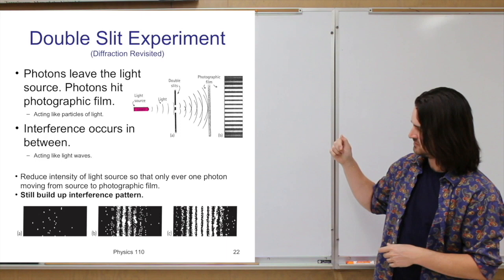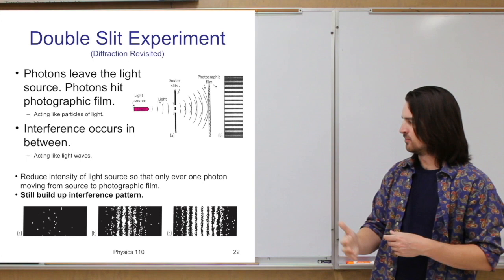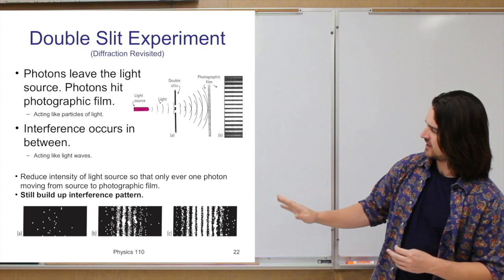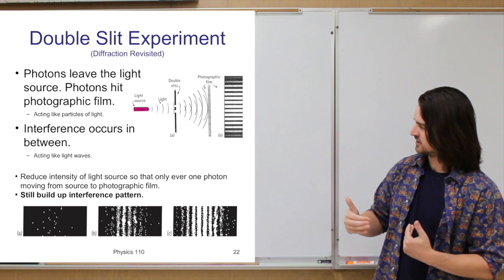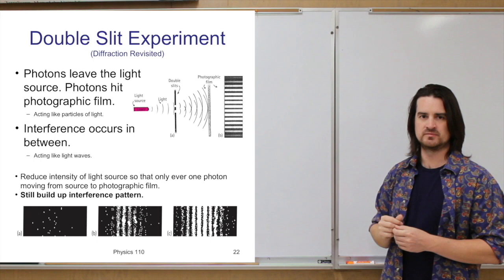The pictures at the bottom are just the progression as you let more and more photons leave the source and arrive at the film. To begin with in A, maybe a dozen or two dozen photons have arrived — you don't really see much of a pattern. However, keep letting more and more photons go, and eventually you start to see this same interference pattern emerge. And this is only with one photon moving through this whole apparatus at a time.